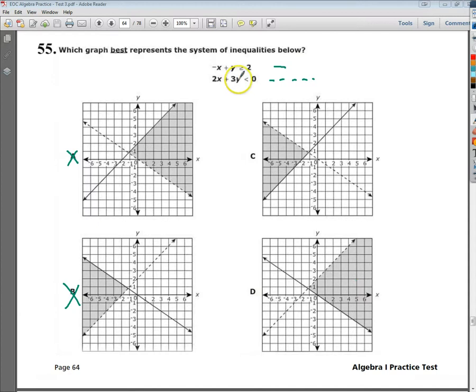Now I'm going to do my conversion. So -X + Y is greater than or equal to 2. I need to add X to both sides. So these cancel. Y is greater than or equal to X + 2. My goal was to get it in slope-intercept form. Now I know that my solid line should have a positive slope.